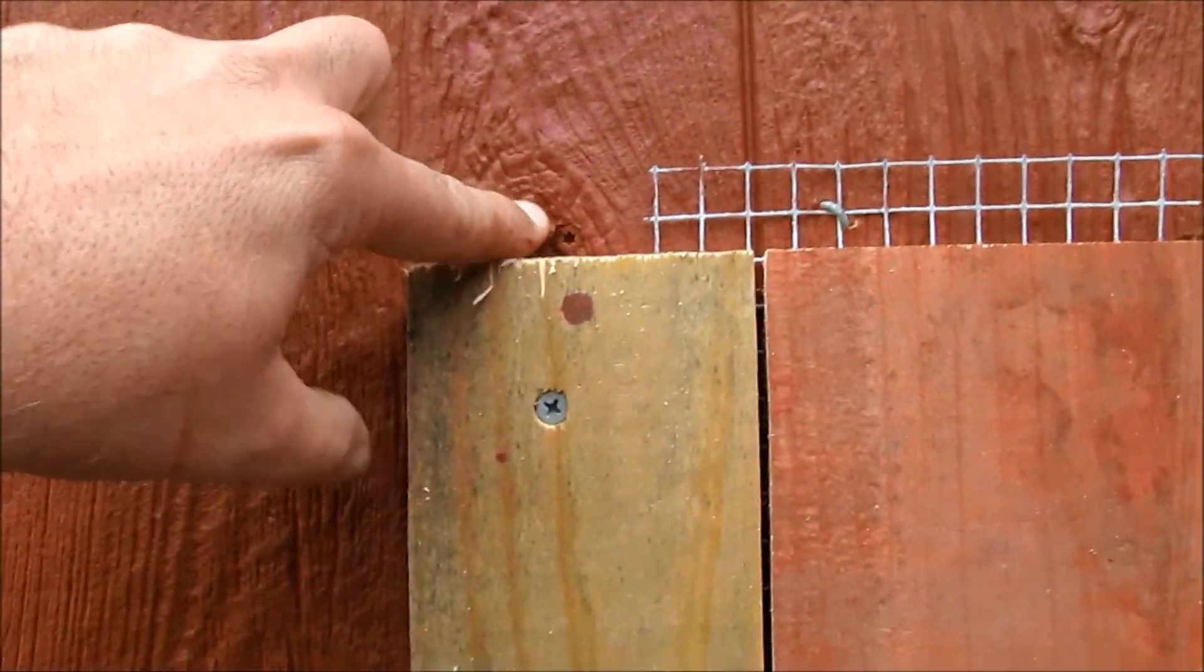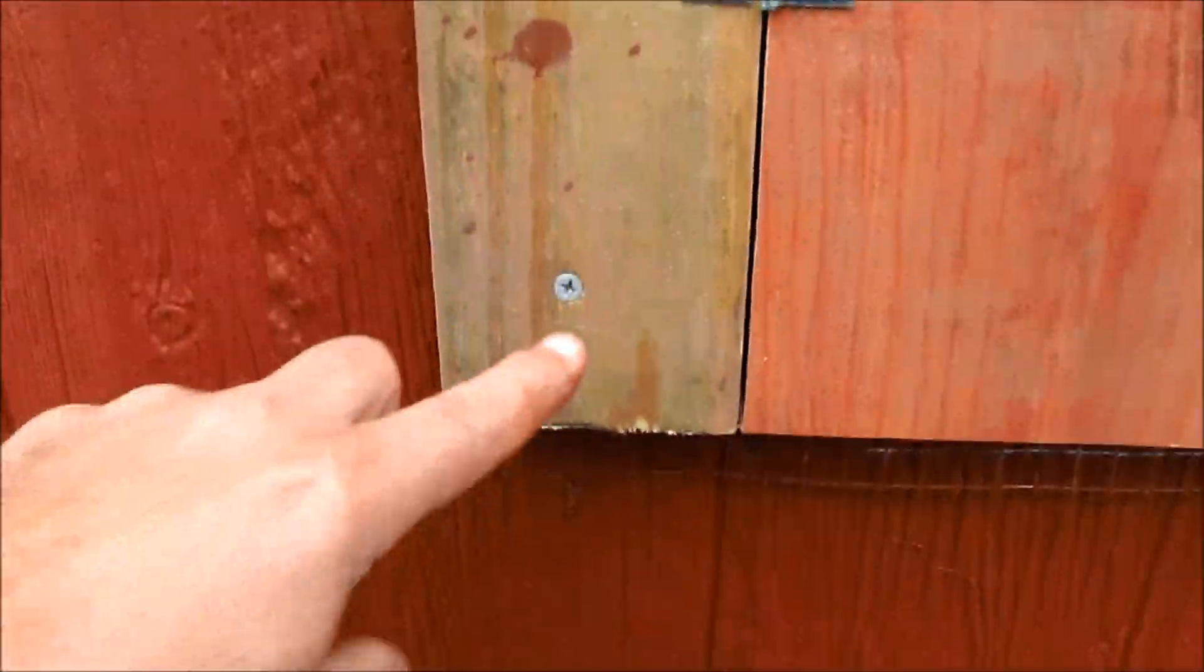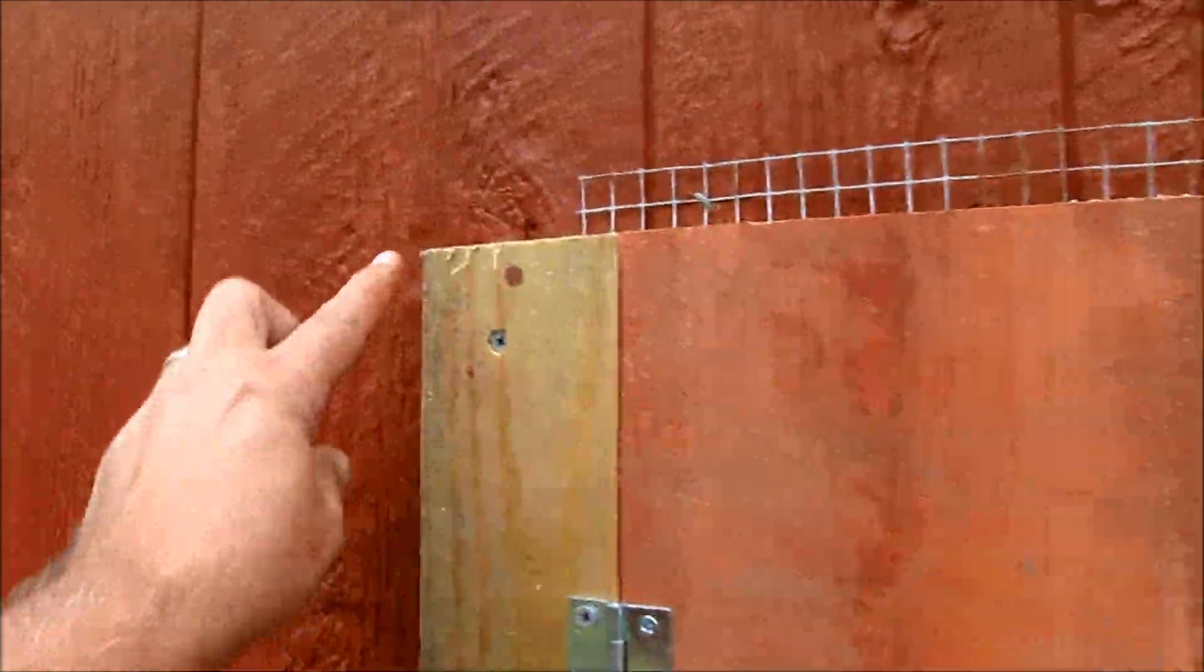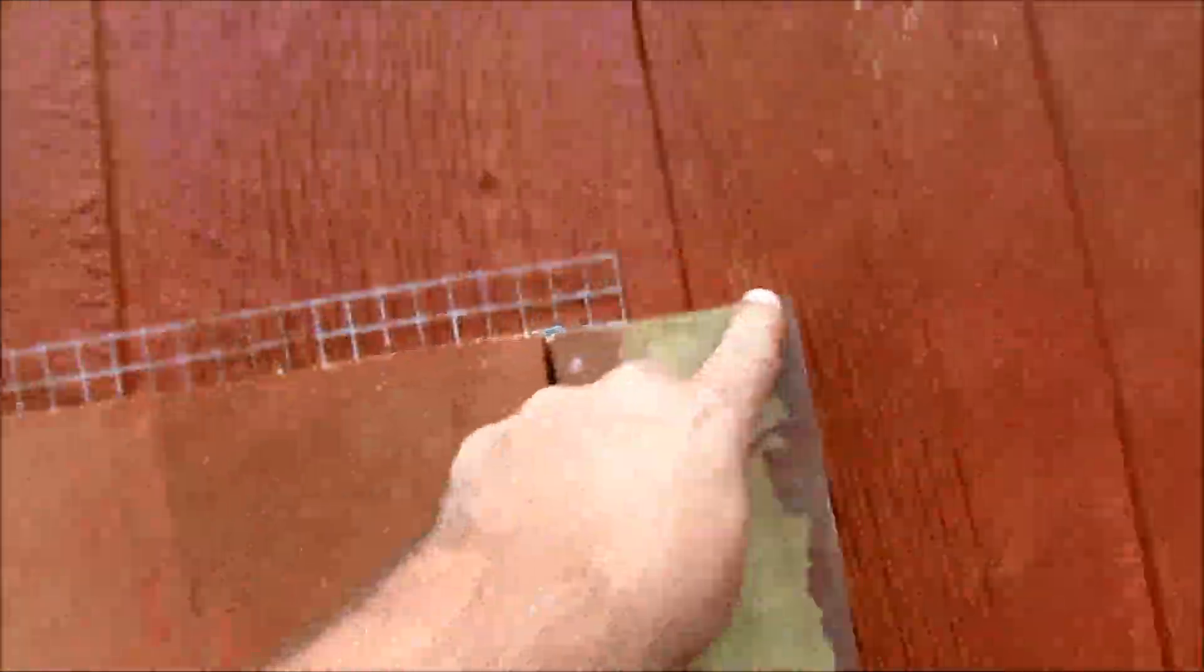Then I put one here that goes into the stud of the building. One, two, three. Then what we're going to do is take and cut a one by four, pressure treated, from here across the top to here.